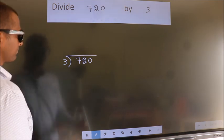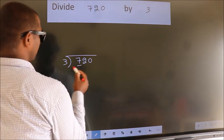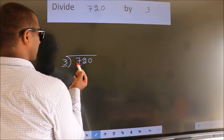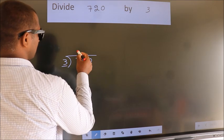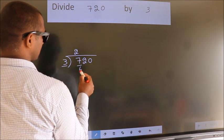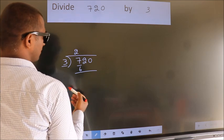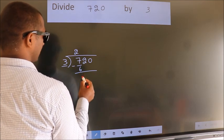Next, here we have 7, here 3. A number close to 7 in 3 table is 3 twos, 6. Now, we should subtract. We get 1.